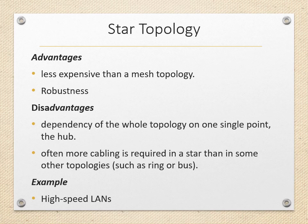Disadvantages of star topology: the topology depends on the central controller, the hub. If the hub goes down, the whole system is dead. This topology also requires more cabling compared to other topologies like ring or bus. Star topology is used in high-speed LANs with a central hub.